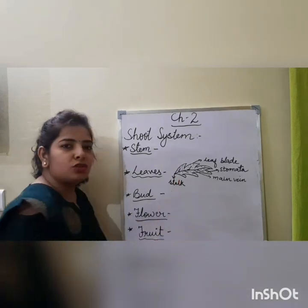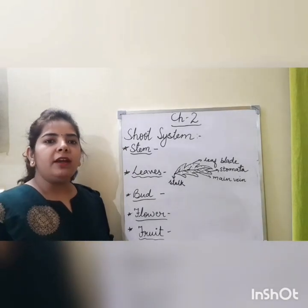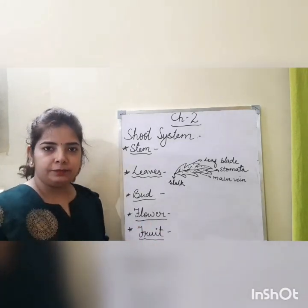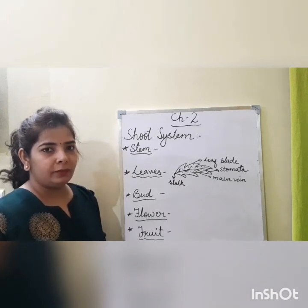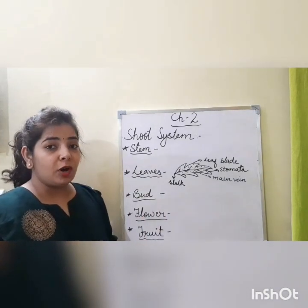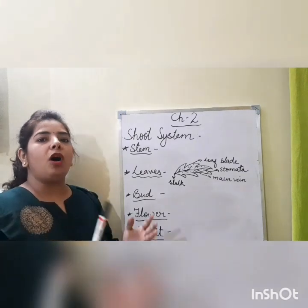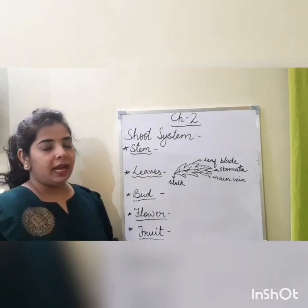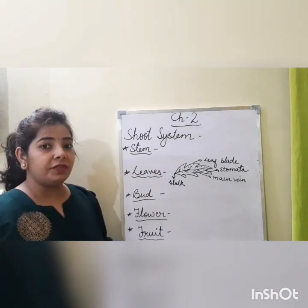The stalk holds the leaves to the stem. Plants prepare their food with the help of minerals, water, carbon dioxide, sunlight, and chlorophyll — a green pigment. This process of preparing food is known as photosynthesis. That is why leaves are known as the kitchen of the plant.